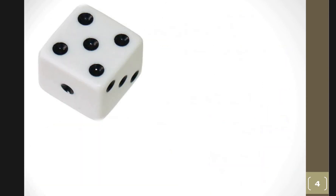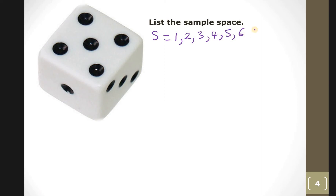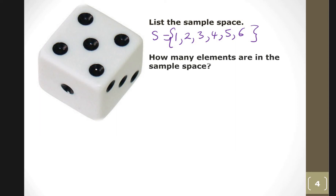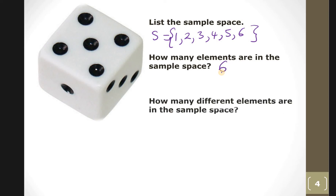Next, let's use a die. The sample space is: one, two, three, four, five, six — these are the possible outcomes. How many elements in the sample space? Six. How many different elements? Six, because each value one through six is distinct.